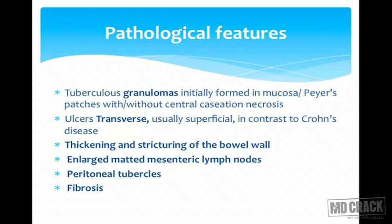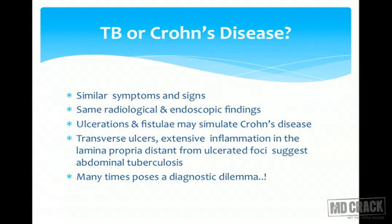The granulomas are formed in the Peyer's patches in the mucosa. The ulcers formed are usually transverse, in a ring-like fashion, but they are superficial — in contrast to Crohn's disease where they are deeper. Chronic ulceration can lead to thickening and stricturing of the bowel wall, resulting in obstruction, and later perforation is possible. The mesenteric lymph nodes can be enlarged and matted, causing omental thickening and adhesions, with peritoneal tubercles, and ultimately fibrosis.